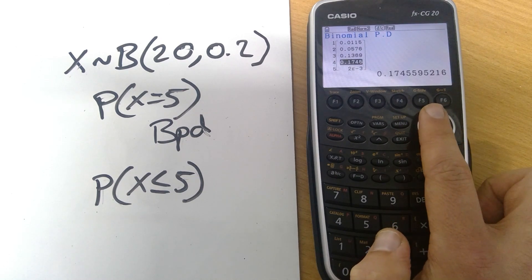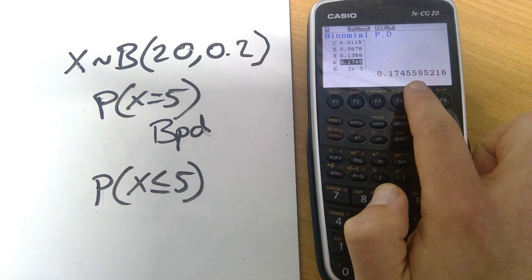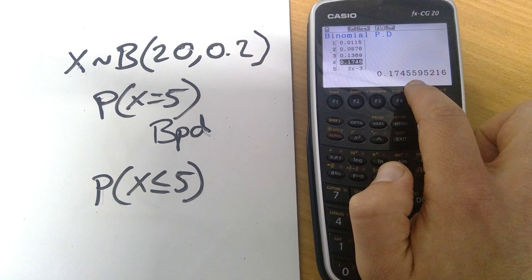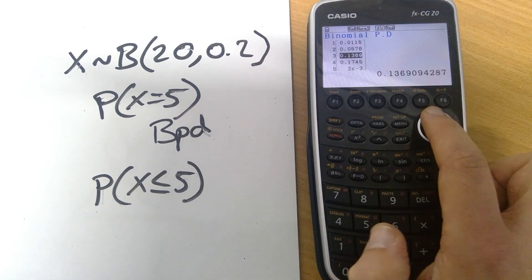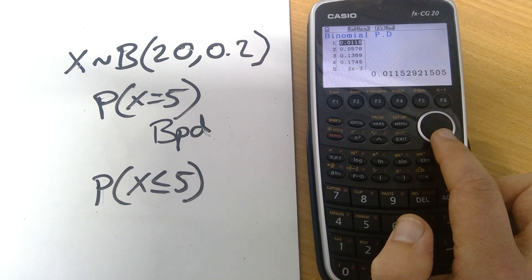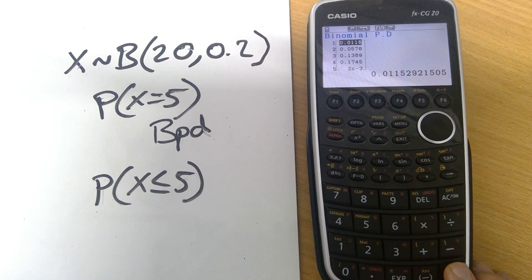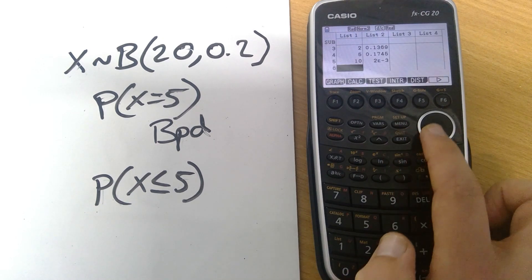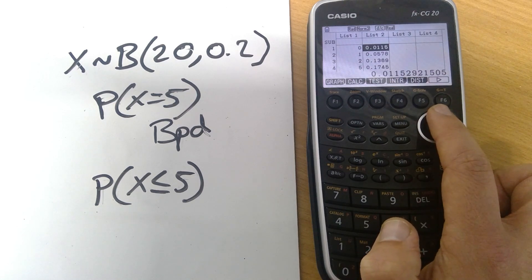You'll notice as well that for example with this one the value that it's providing in the table is not actually rounding up. Our next digit would be 5. It hasn't rounded up so we just need to be aware of that but you can access the values to 10 decimal places just by scrolling through. Pressing exit will take us back to the list and there we can see each of those values that have been saved into list 2.